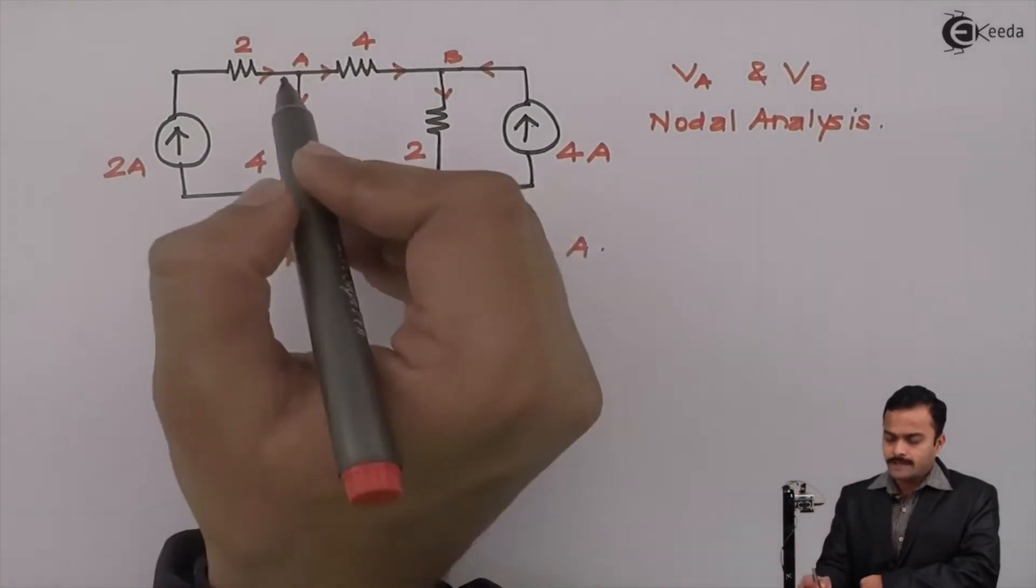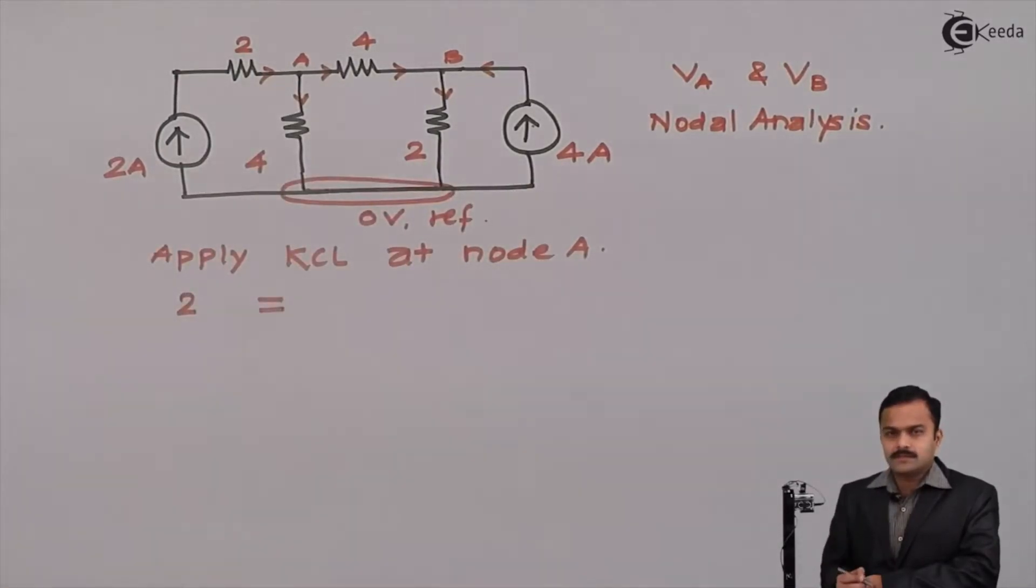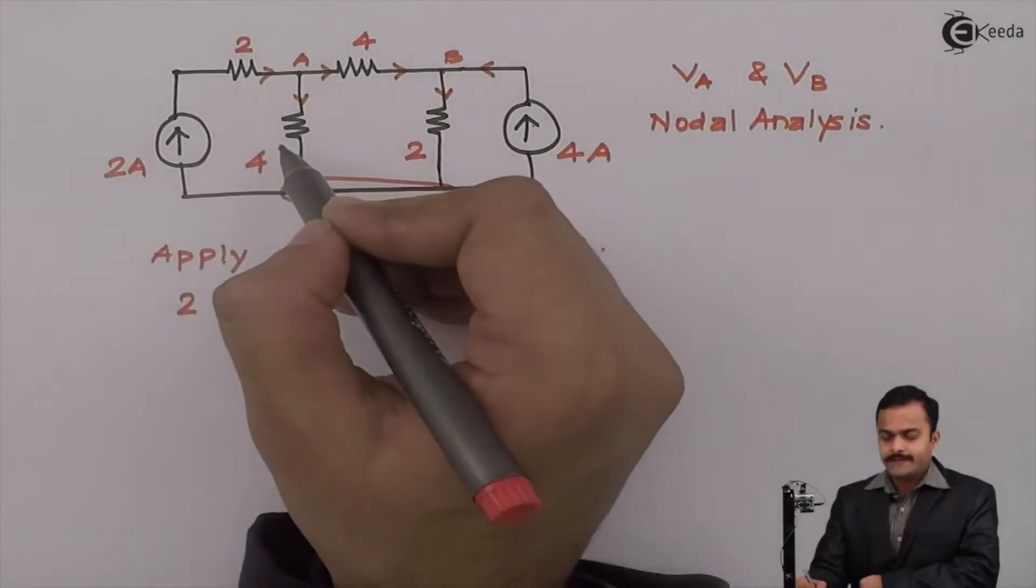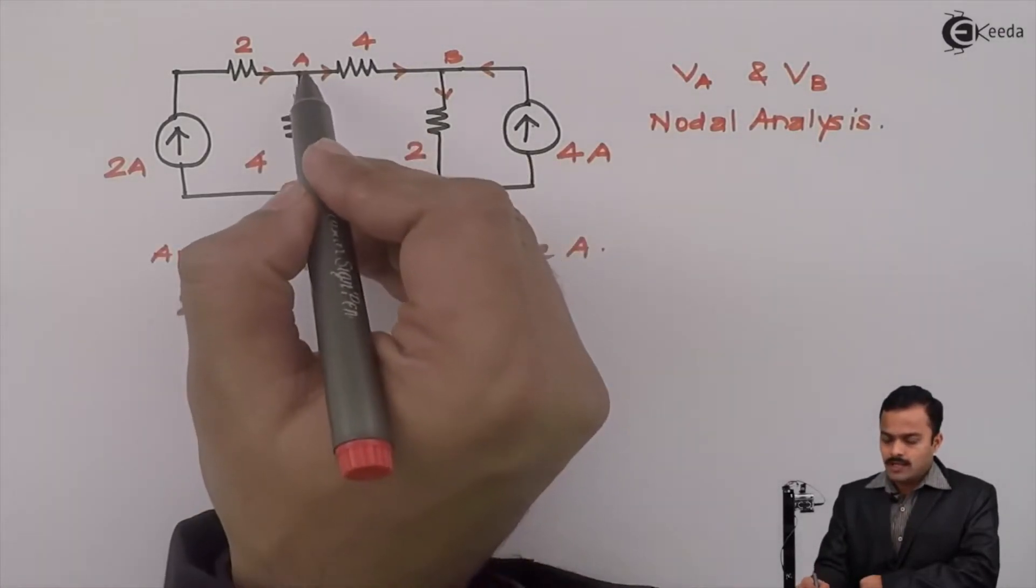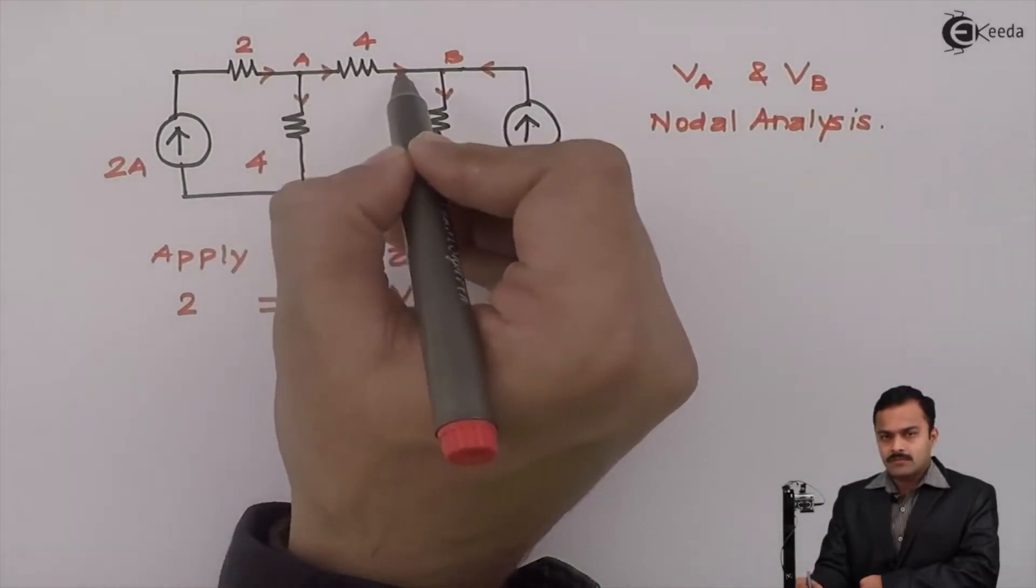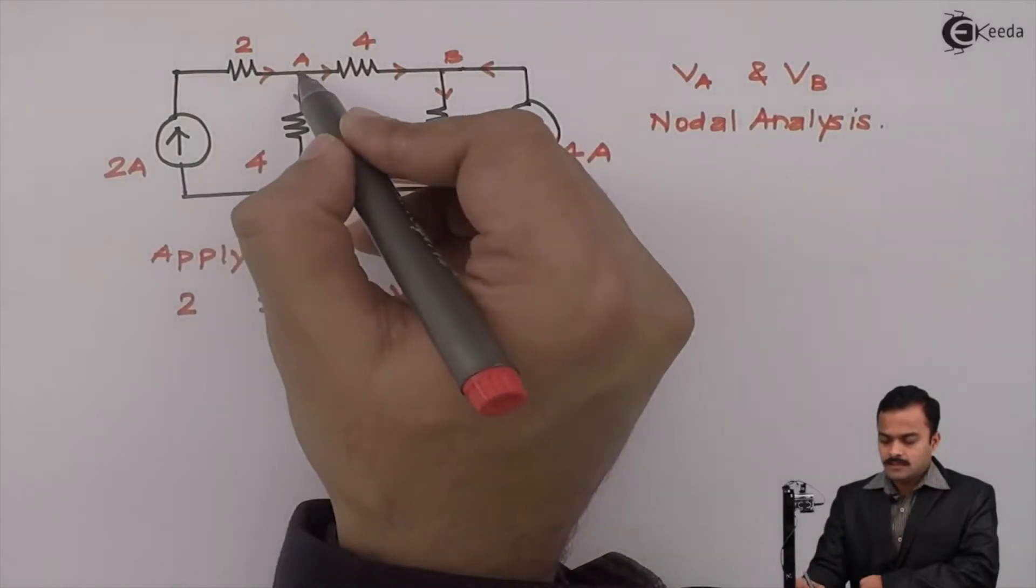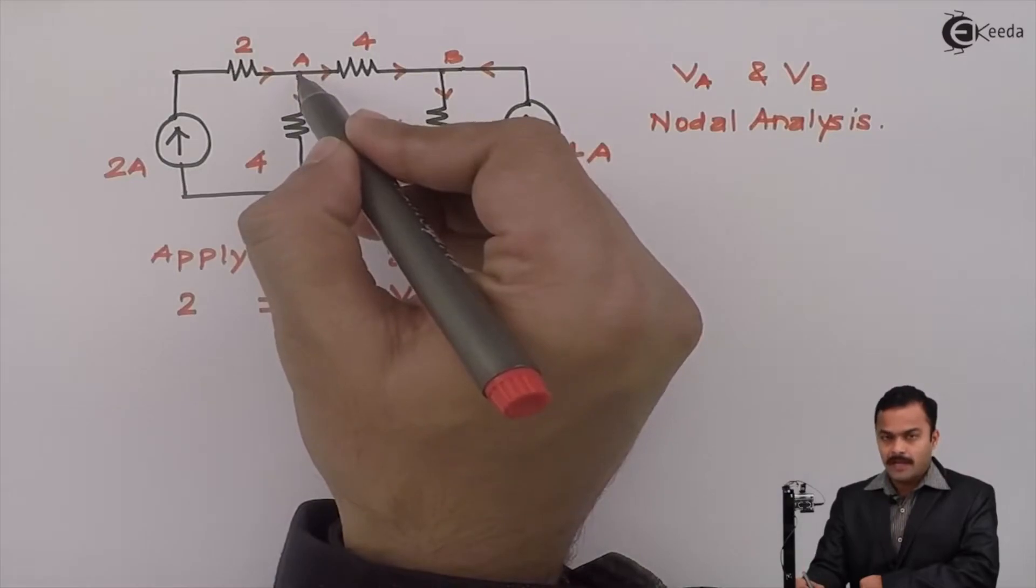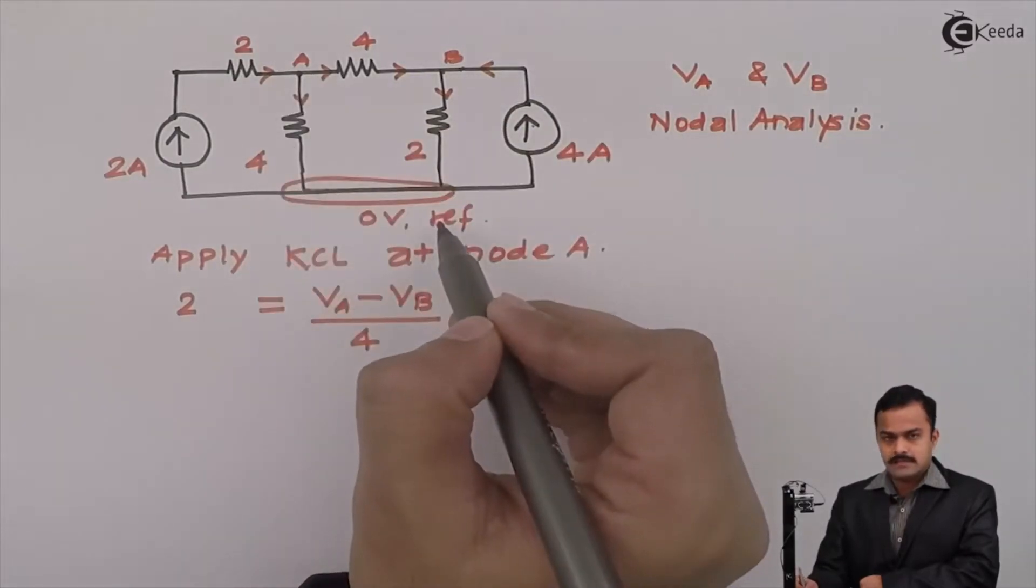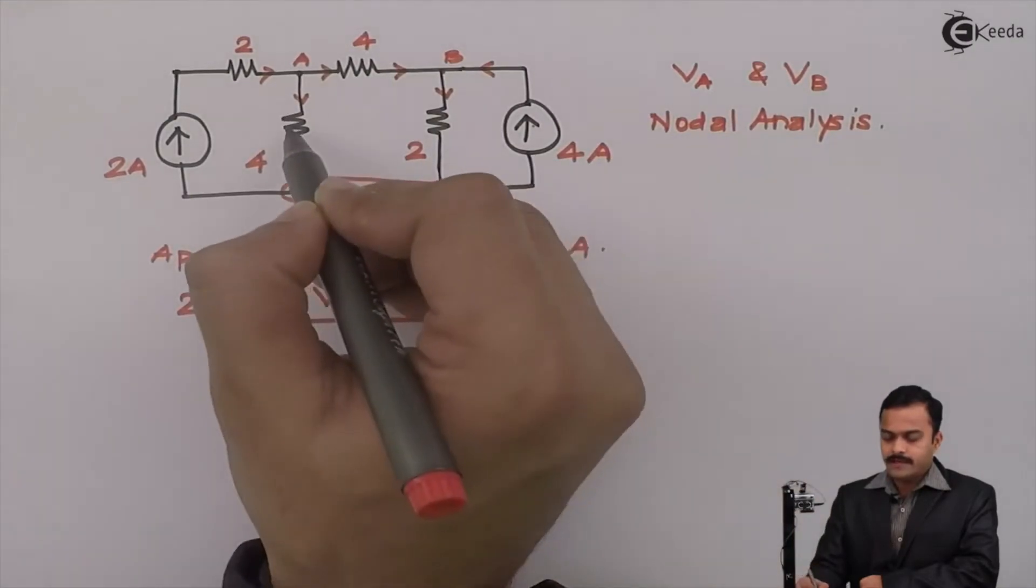Let's apply KCL at node A. 2 amperes incoming current. So I am writing all incoming currents together equal to outgoing currents. So current which is flowing through this branch is from A to B. So I will write the equation VA-VB divided by resistance of this branch 4 ohm. Because this is also outgoing current starting from A and ending on a reference. So the equation is VA-0 divided by 4.